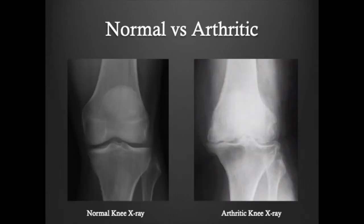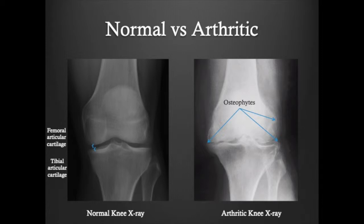These x-rays show a normal knee as well as an arthritic knee. You can see the femoral articular cartilage and the tibial articular cartilage. On the arthritic x-rays, you can visualize the osteophytes or bone spurs, as well as the joint space narrowing, resulting in bone-on-bone arthritis.